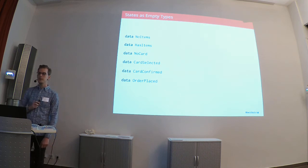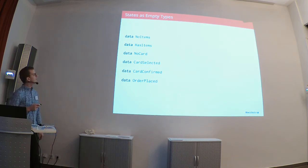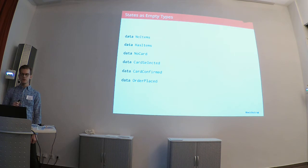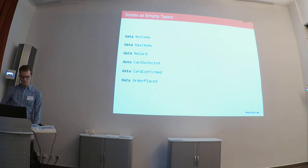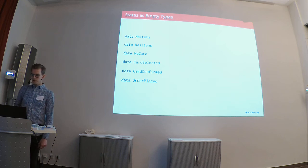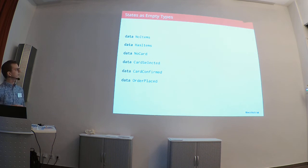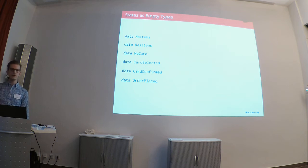To begin, we define our states as empty data types. This is a fun thing you can do in Haskell — you can define a type which has no constructor, so you can't really create a value inhabiting this type. These types are used as marker types — they are basically the names of the states.